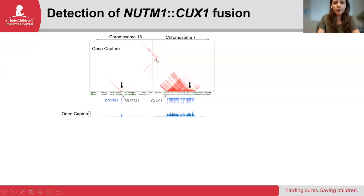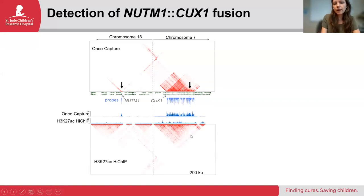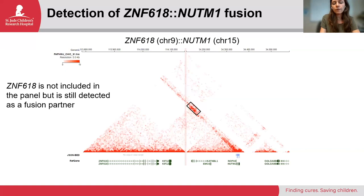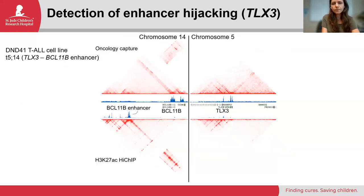Comparing to HI-CHIP data in the same sample: you do see evidence of this translocation in HI-CHIP, but we sequenced HI-CHIP about two-fold deeper yet found a lot more reads spanning this breakpoint in the oncology capture approach. In another PDX sample where NUTM1 is rearranged to ZNF618—a gene not included in the capture panel—we can still detect the interaction. So even if one of the fusion partners is not included in the panel, as long as one of them is, it's likely you will be able to detect evidence of the translocation or fusion.